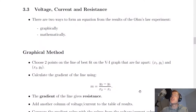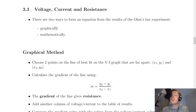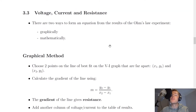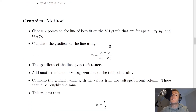This video follows on from the theory video on the Ohm's Law experiment, and it says that there are two ways to form an equation from the results of the Ohm's Law experiment, which are graphically and mathematically. So we'll look at the graphical method first, and then we'll look at the mathematical method.